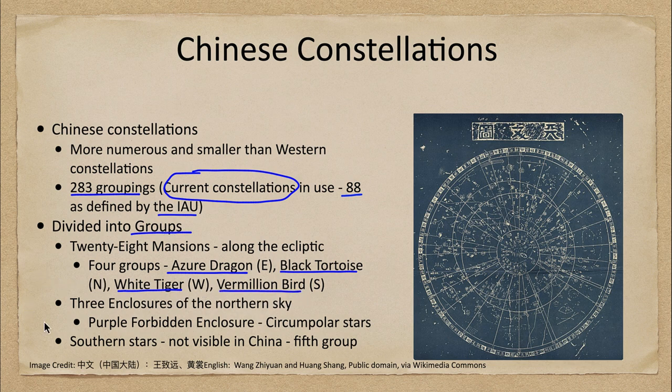That makes four groupings. The fifth group was the southern stars — those that would not be visible from China. Once travelers went beyond and new stars became visible, additional stars were added in, but those were not prominent and could not be seen from China.